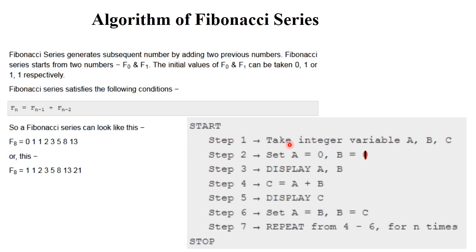In the algorithm, three integer variables are declared: a, b, and c. Step one: declare integer variables a, b, c. Step two: set a equal to zero and b equal to one, because these two numbers are the constant values. Step three: display a and b — output zero and one.